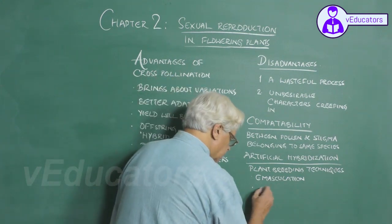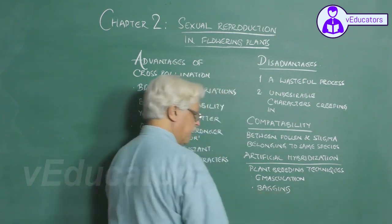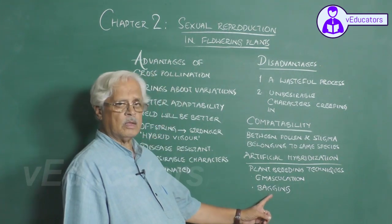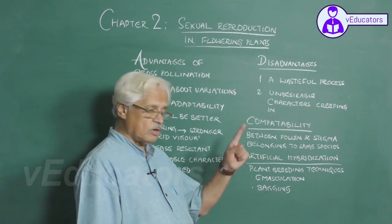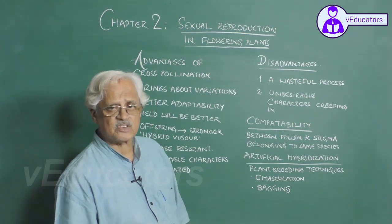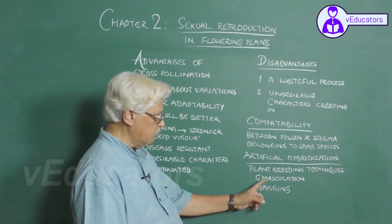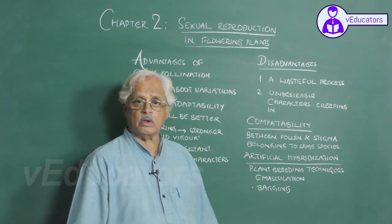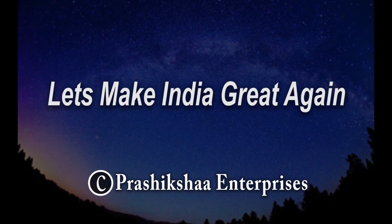Another technique commonly followed here is called bagging. The gynoecium is covered with a plastic bag so that it does not get contaminated with the pollen grains of other plants. So emasculation and bagging are the two techniques followed in artificial hybridization involving cross-pollination.